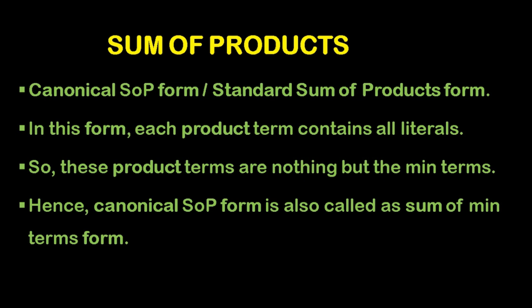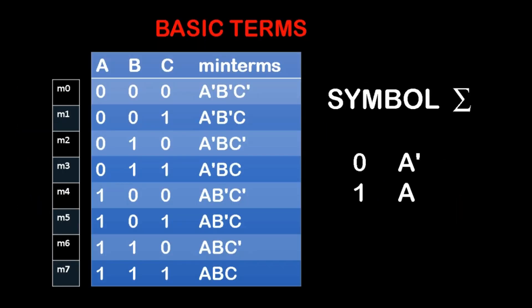Now we will see the basic terms in sum of products. First, the truth table — here we have three input values A, B, and C, and totally eight input combinations. The input combinations are from 0,0,0 which is the equivalent value of 0, till 7, which is the value 1,1,1. For example, if it is 4, then it is written as 1,0,0. All those are the equivalent decimal values.